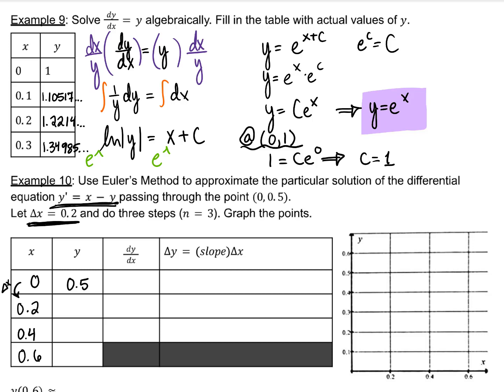The slope is dependent on the x value minus the y value. Take that slope and multiply it by delta x. So negative 0.1 is our delta y. We're going to add that to our previous y. 0.5 plus negative 0.1.